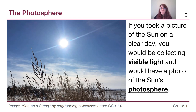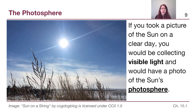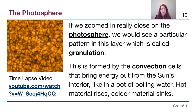If we were to take a picture of the sun on a clear day with a camera — never look directly at the sun with your eyes — we would be collecting visible light and we would have a photo of the sun's photosphere. An easy way to think about it: the photosphere can be seen in visible light. And if we were able to zoom in really close with a telescope, we would be able to see a pattern called granulation.